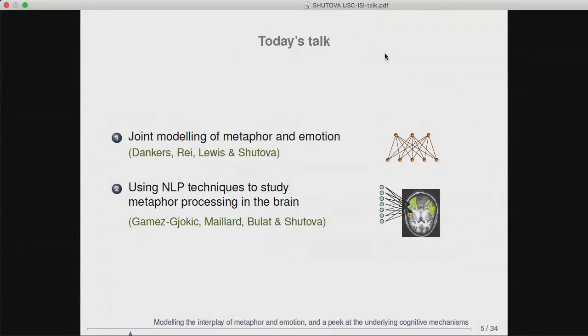Today I'll be talking about two different research projects — a bit more about the first one and a bit about the second. The first is where we've built a joint model of metaphor and emotion aiming to investigate their interaction in sentence representation learning, approaching composition using neural models. The second is our recent work where we use general purpose data-driven semantic models — word and sentence representations — to try and better understand how humans process metaphor.